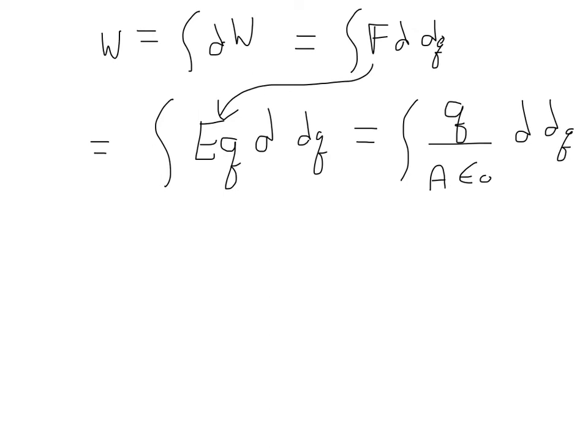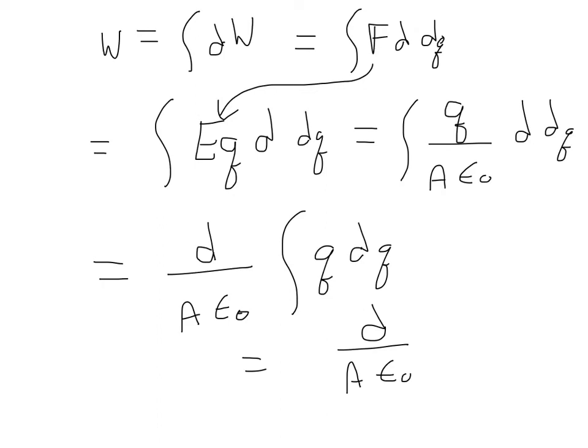So now I integrate. Now let me pull out all the constants. I have 1 over A epsilon 0 times d. Put the d on top there. Integral q dq. So this becomes d over A epsilon 0 times q squared over 2.